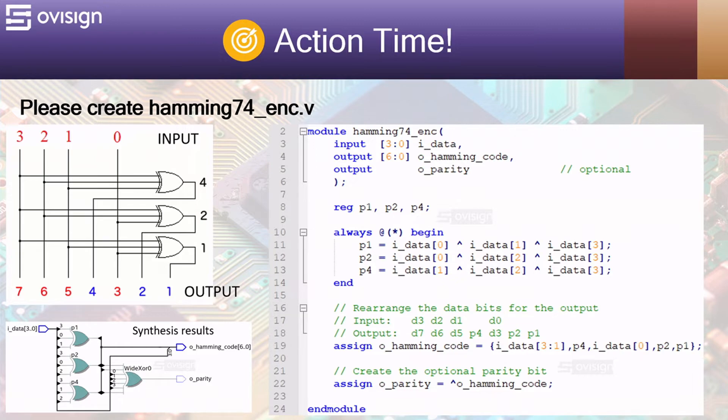At line 19 we assemble the circuit output by concatenating the input bits with the parity bits at their corresponding positions. At line 22 we create the parity bit used by the Hamming 8 for by using the XOR reduction operator on the 7-bit Hamming code.